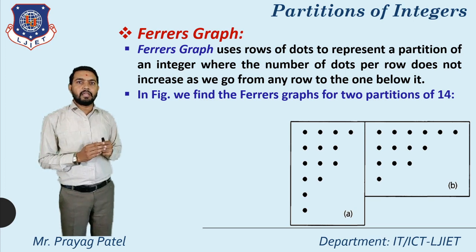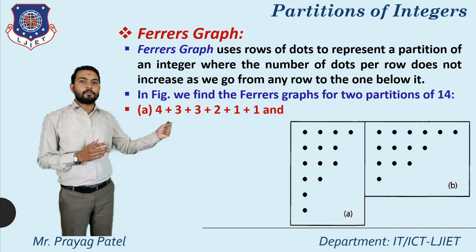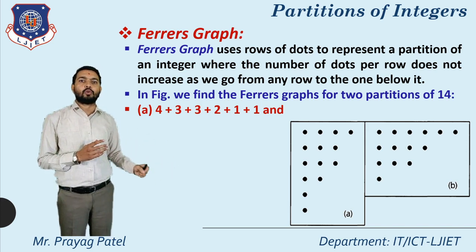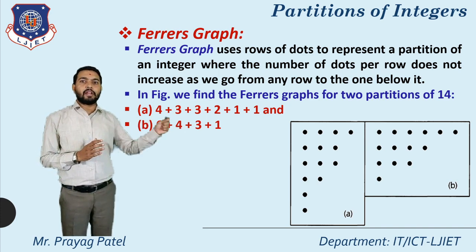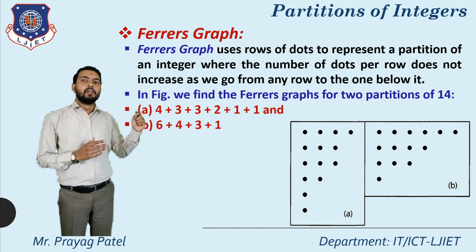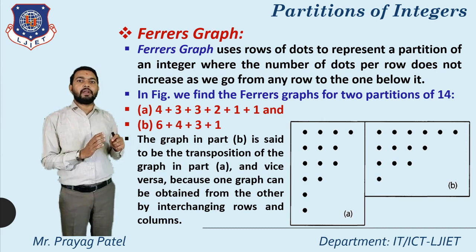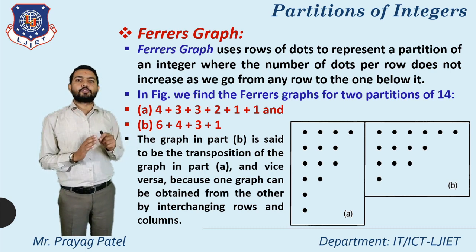Here we find the Ferrers graph for two partitions of 14. The first possibility is 4+3+3+2+1+1, so the first row has 4 dots, second row 3 dots, third row 3 dots, next row 2 dots, and last two rows 1 dot each. The second representation is 6+4+3+1=14, so figure B has first row 6 elements, second row 4, third row 3, and last row 1.